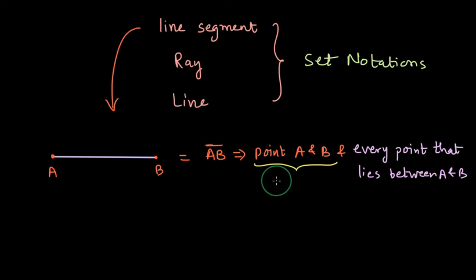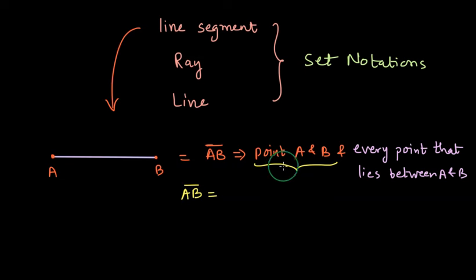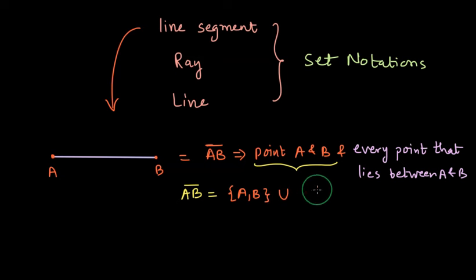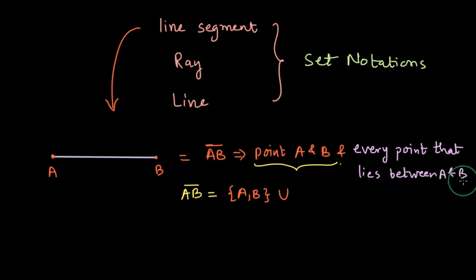Let us focus on the first part: point A and B. So let us try and write segment AB in set notation. The first part — let me write it in orange — is the point A and B, which we can write using curly brackets: {A, B}. That means we are just considering points A and B. Union — union means 'and' — and now we will write the notation for this statement: every point that lies between A and B.